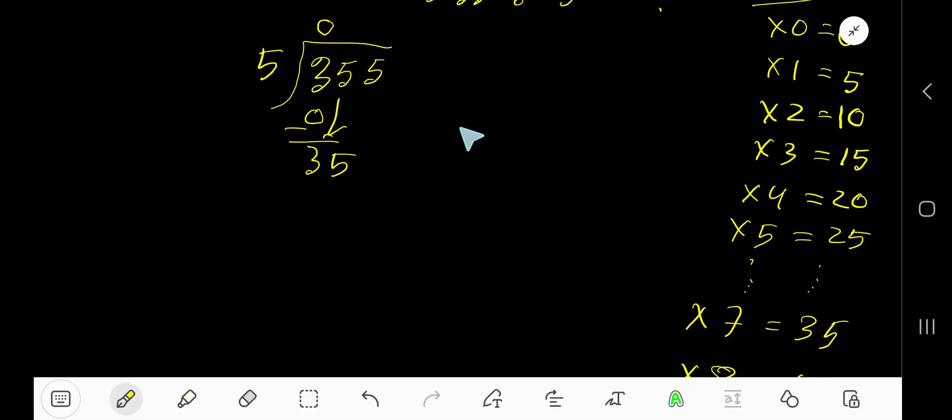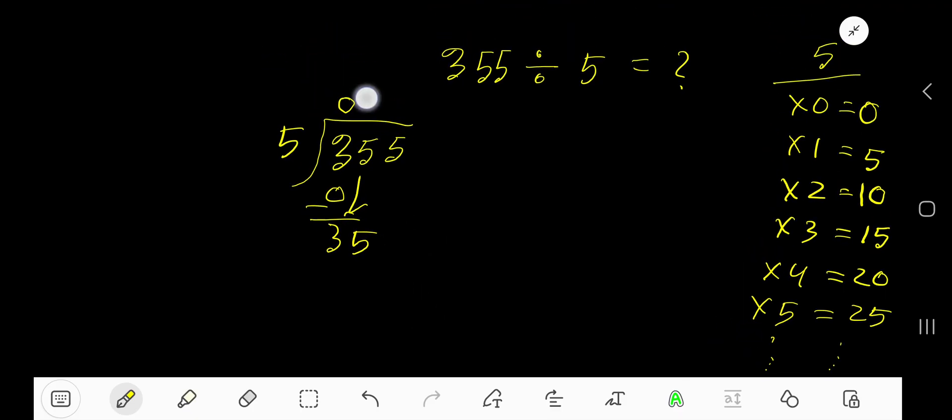5 goes into 35 7 times. Write 7. 7 times 5 is 35. Subtract to get 0, then bring down this 5.